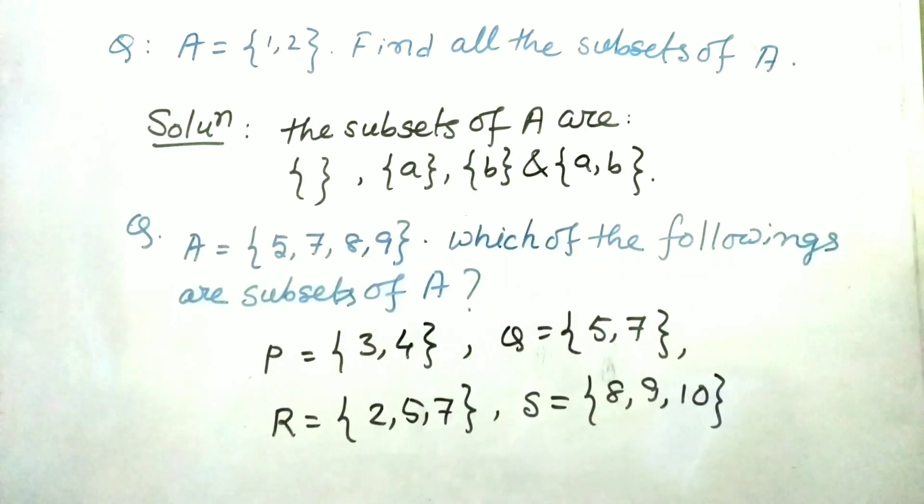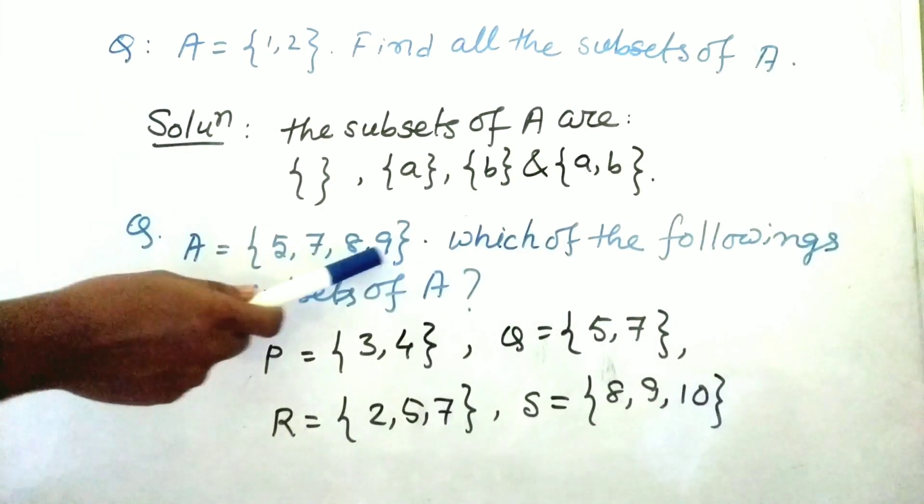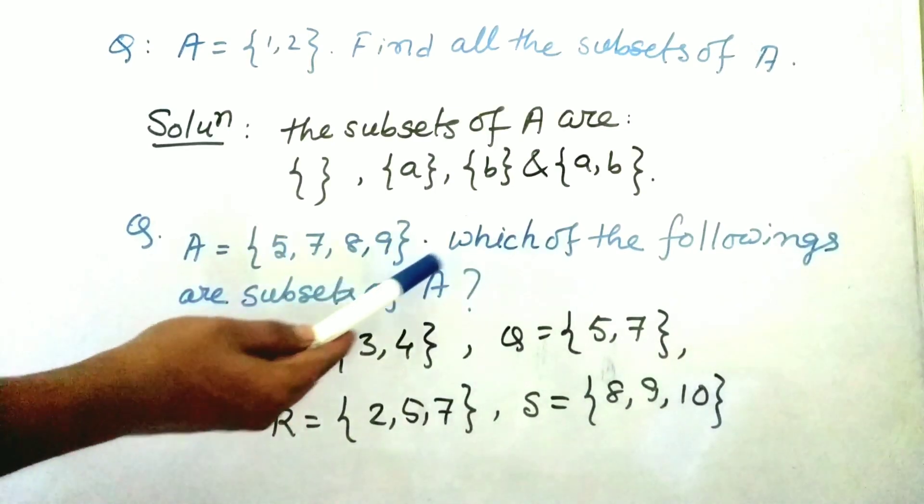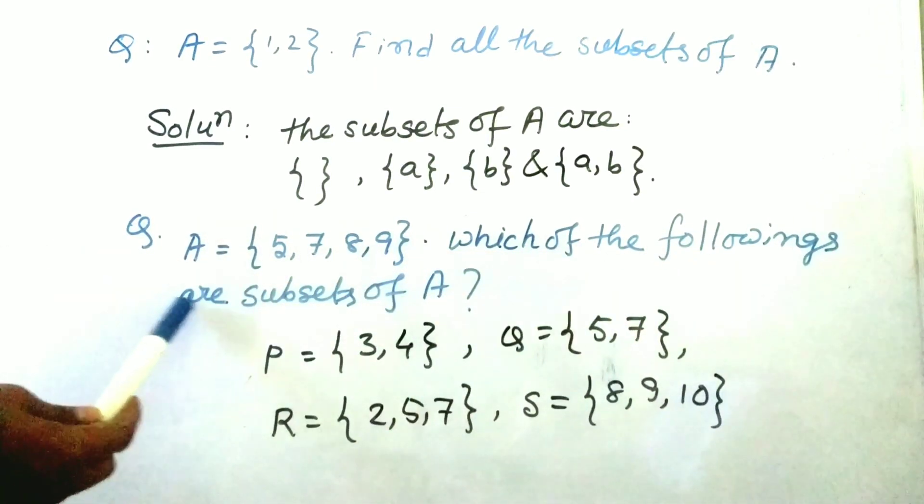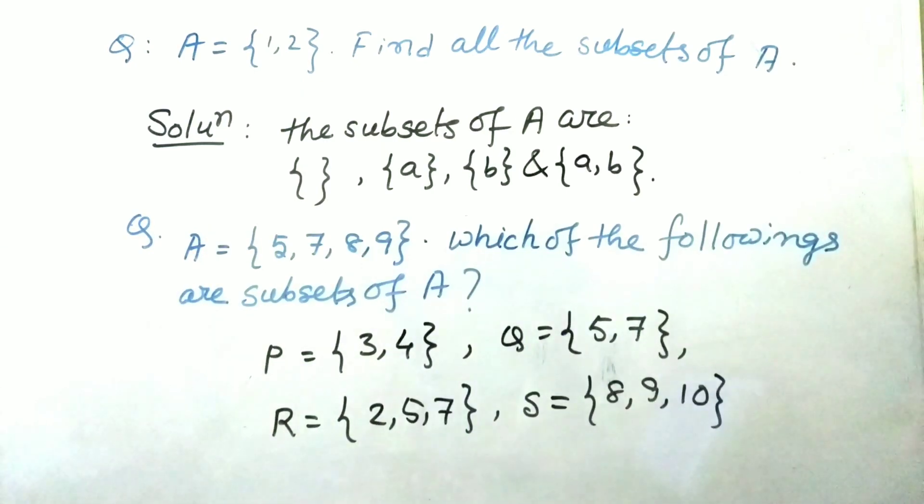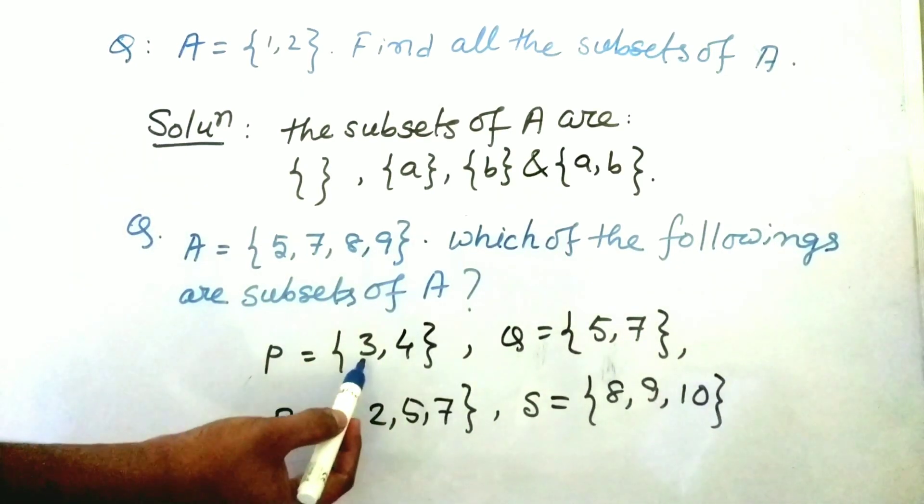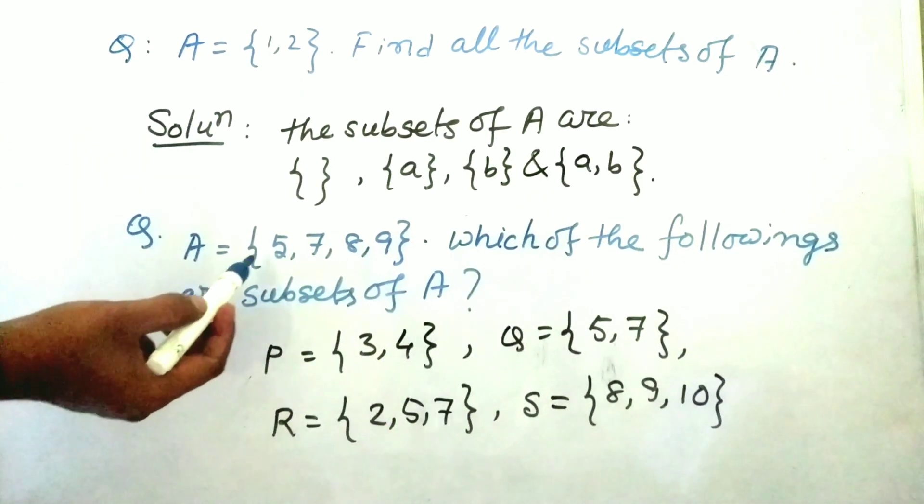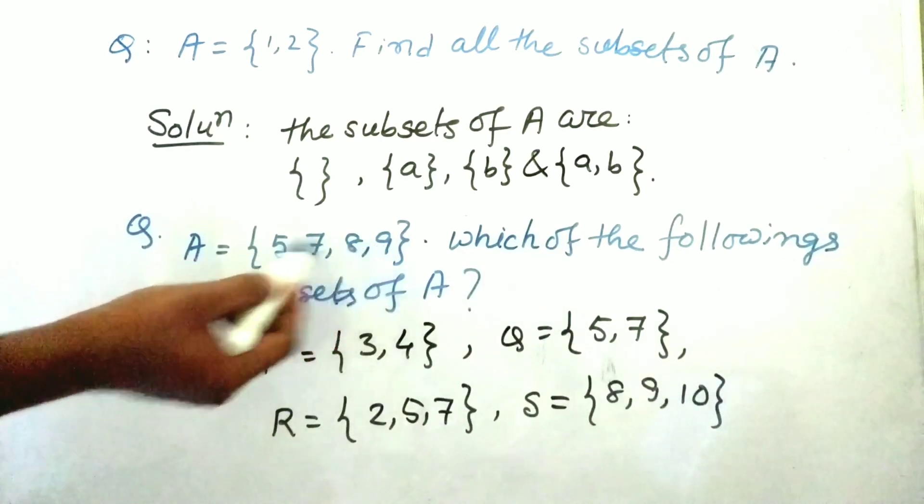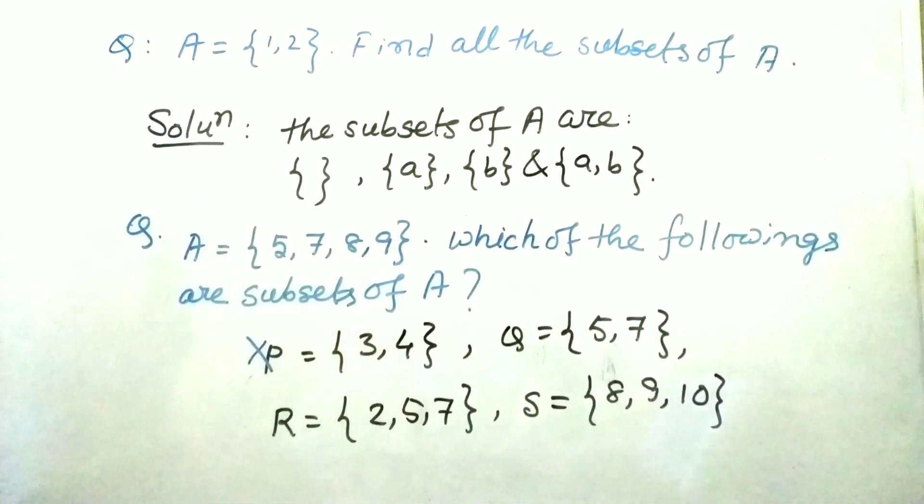Let's go for another question. A is equal to 5, 7, 8, 9. Now the question is which of the following are subsets of A? Now we can easily see that 3 and 4, these two does not belong to this set. So therefore this is not a subset.